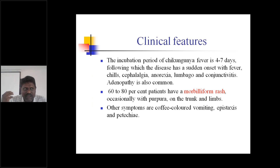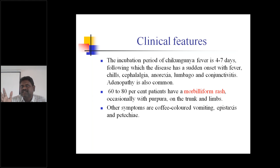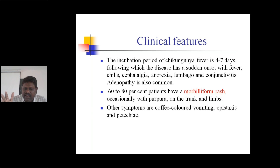Anorexia will be present, the lumbar column will be severely affected, conjunctivitis is present, and adenopathy is also common. In this case, only the joints are mainly involved — especially small joints — in this viral infection that is Chikungunya.